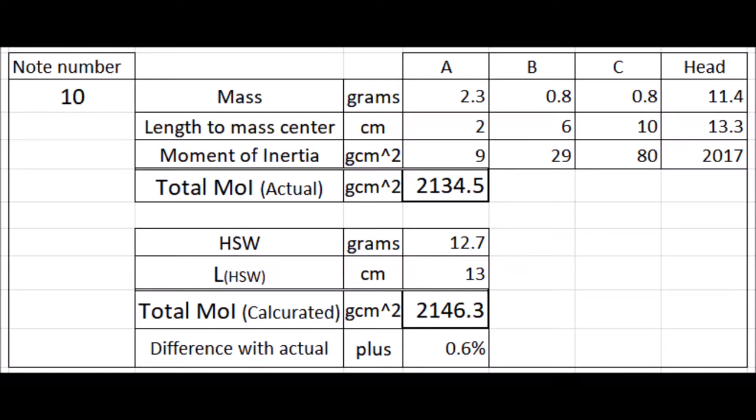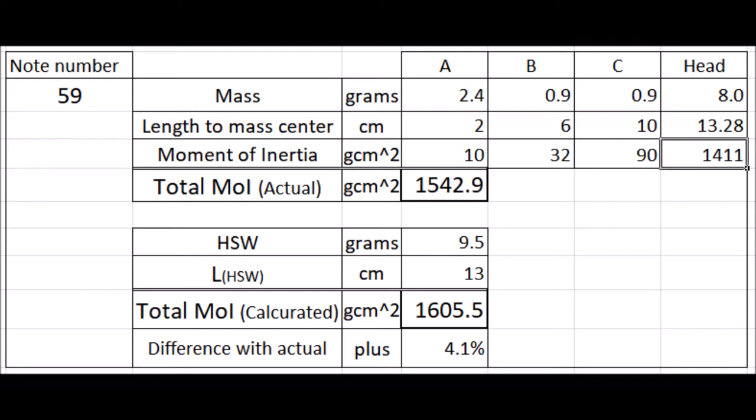This is the sample from bass. Actual moment of inertia is 2134.5. Calculated inertia is 2146.3. The difference between these two is 0.6%. We get a very close figure by calculation.